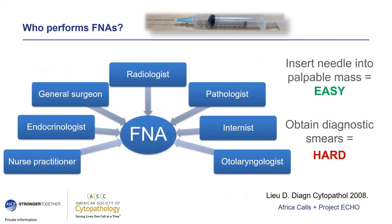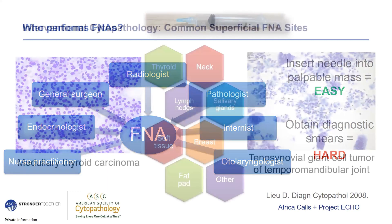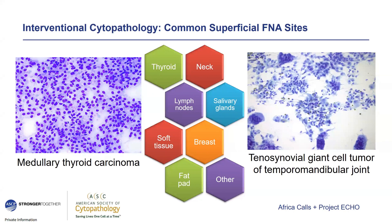FNA biopsy in its modern form came around in the 1930s, and it seems like pretty much any healthcare practitioner with access to a needle and syringe can perform FNAs. But although putting a needle into a palpable mass is easy, obtaining well-fixed, thin, evenly spread cellular smears that are actually diagnostic is quite difficult. This is where pathologists have the advantage of the feedback loop between slide preparation and diagnosis. Thyroid is the most commonly sampled site for FNA, but the neck, lymph nodes, and salivary glands are also common. Here's an air-dried Romanowski stain of a medullary thyroid carcinoma and a pap stain of a tenosynovial giant cell tumor of the temporomandibular joint.